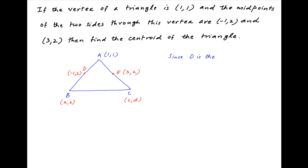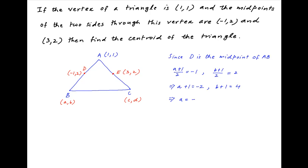Since D is the midpoint of AB, we have (a + 1) / 2 = -1 and (b + 1) / 2 = 2, which implies that a + 1 = -2 and b + 1 = 4, and therefore a = -3 and b = 3. So the coordinates of B are (-3, 3).